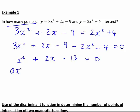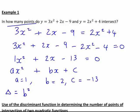This is of the form ax squared plus bx plus c. In this particular case, x squared is just 1x squared, so a equals 1, b equals 2, c equals negative 13. The discriminant delta equals b squared minus 4ac. That's 2 squared minus 4 times 1 times negative 13, which works out to be equal to 56.